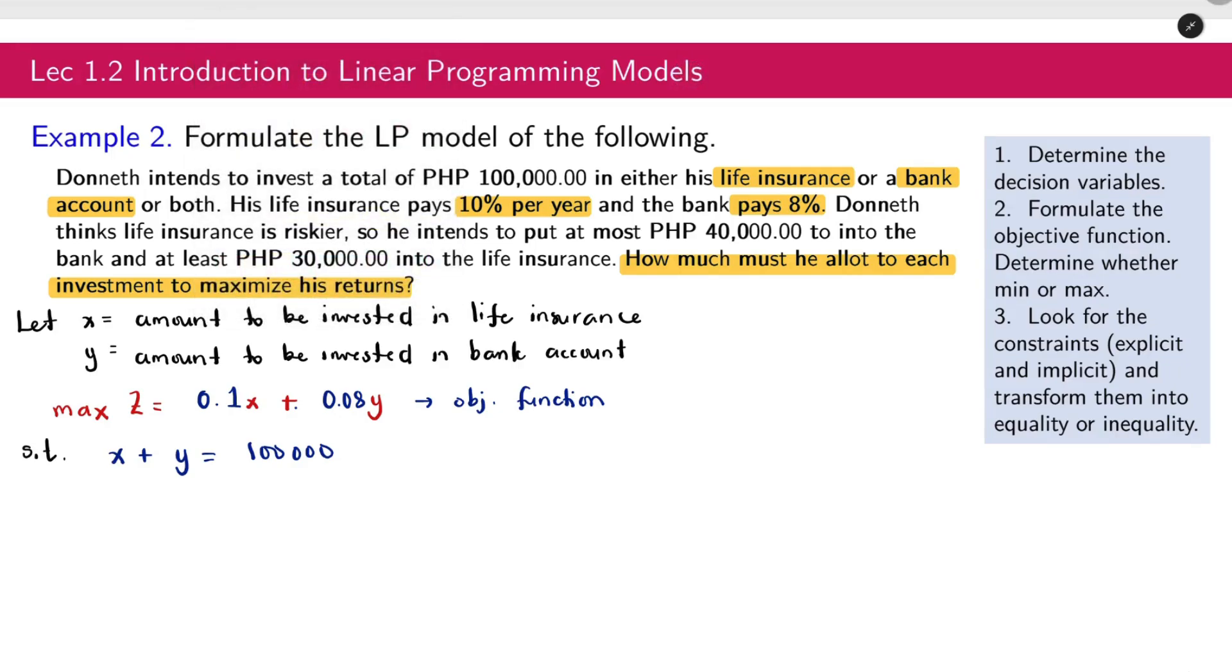Take note that we have an equal sign because it says here that total of 100,000 is what he wants to invest. So it's not at least, it's not at most. It's the total that was mentioned. In this problem, take note that he intends to invest a total of 100,000. Meaning to say, he is not going to invest at least or at most, it's fixed at 100,000 to invest. So it should be an equal sign.